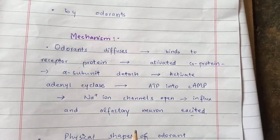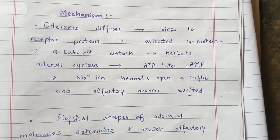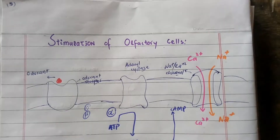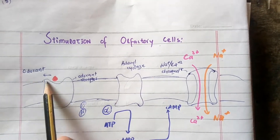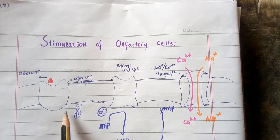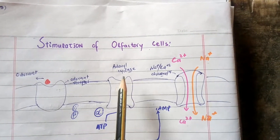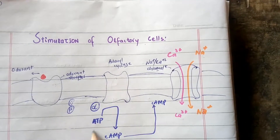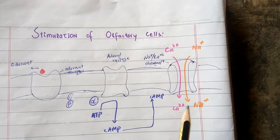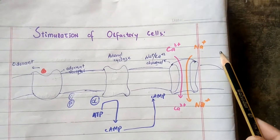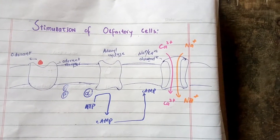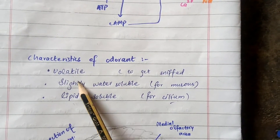This conversion opens up the sodium ion channels and sodium ions are poured into the cell, and the olfactory neuron becomes activated or excited. The physical shape of the odorant molecules determines which olfactory cell will be stimulated. In this diagram: when the odorant attaches to the odorant receptor on the cell membrane, the alpha subunit of the G protein detaches, activates adenyl cyclase, which converts ATP into cyclic AMP, which then opens the sodium channels, and sodium ions pour into the cell to excite the olfactory cell.